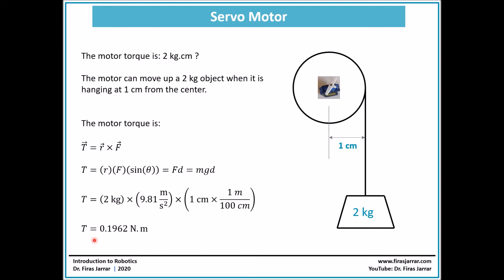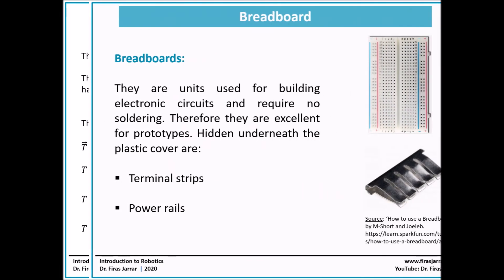So as a rule of thumb, you can simply take whatever value you have in kg cm and just divide it by 10 and you will get it in Nm.